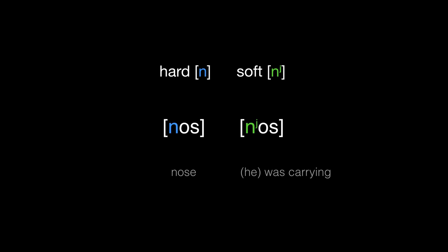So Russian has two sets of consonants: hard, unpalatalized, and soft, or palatalized. That is, pronounced with the tongue raised toward the roof of your mouth. We have hard M and soft M, hard D and soft D, hard T and soft T, and other pairs like these.